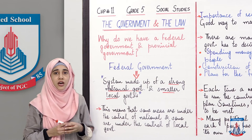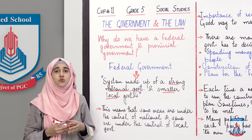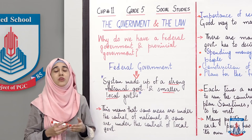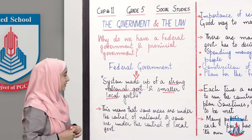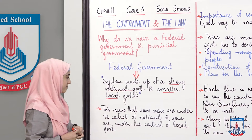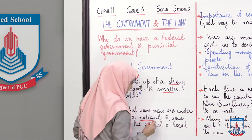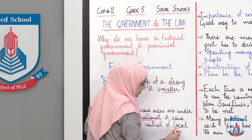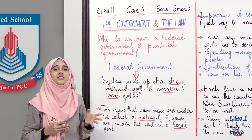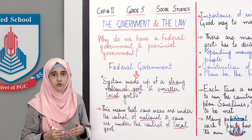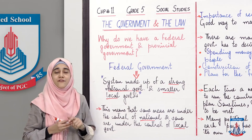Kyunke agar aap sirf ek hi government rakho ge, to us ke liye chote ilaqon tak pahunchna, wahaan ke masail ko sunna, wahaan ki problems ko solve karna mushkil ho jayega. Is liye behtar hai ke door daraaz ilaqon mein unki governments banai jayen aur wahaan se unke masail national government ya senate mein pesh karein. Kuch areas national government ke under hote hai, aur kuch local governments ke under - yeh donon mil kar humari federal government banati hai.